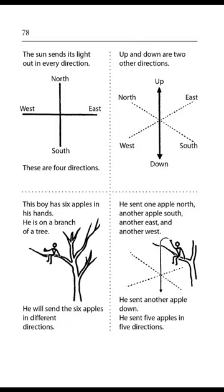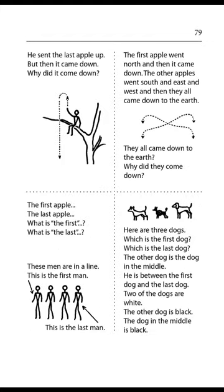Page 78. The sun sends its light out in every direction. These are 4 directions. Up and down are 2 other directions. This boy has 6 apples in his hands. He is on a branch of a tree. He will send the 6 apples in different directions. He sent 1 apple north, another apple south, another east, and another west. He sent another apple down. He sent 5 apples in 5 directions. The last apple went up but then it came down. The first apple went north and then came down. The other apples went south, east, and west and then all came down to the earth. Why did they come down?